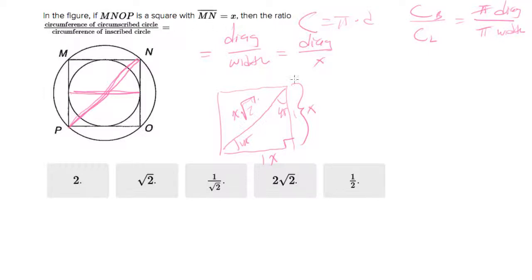So now we know the diagonal of the big square. The diagonal of the square is x root 2, and the width of the square is x, so the x's cancel out and what you're left with is root 2.